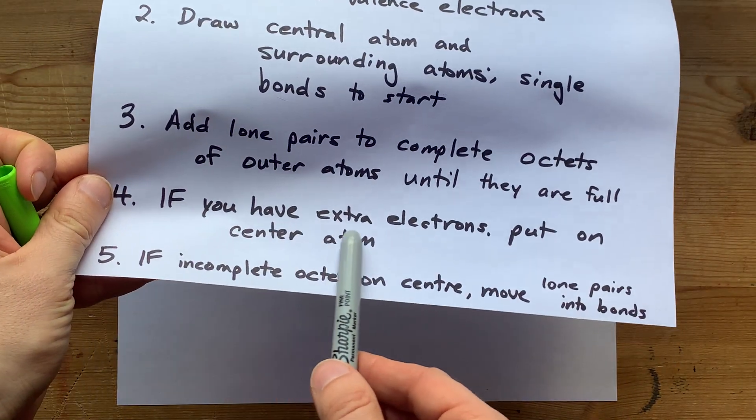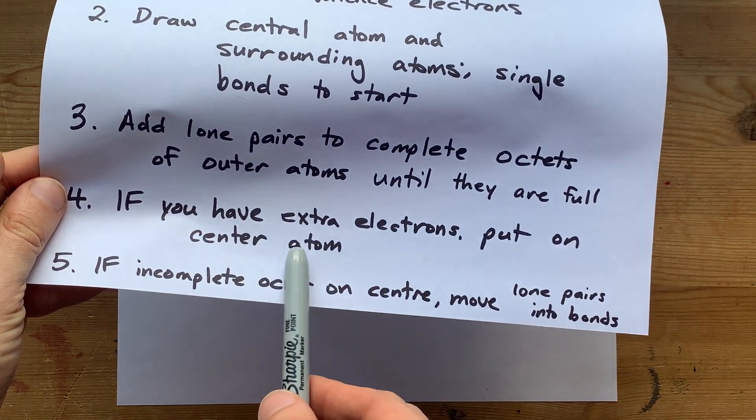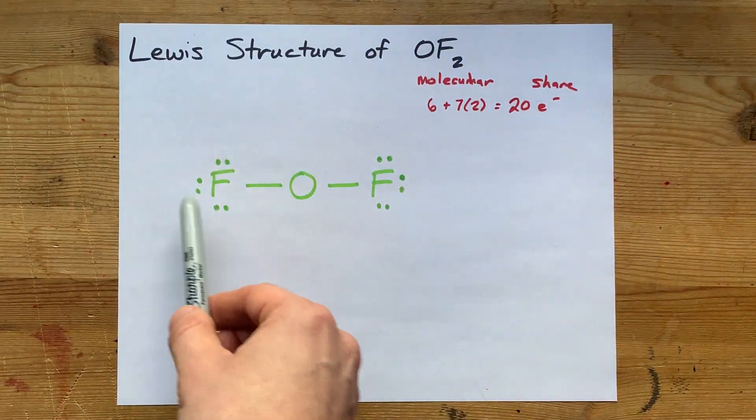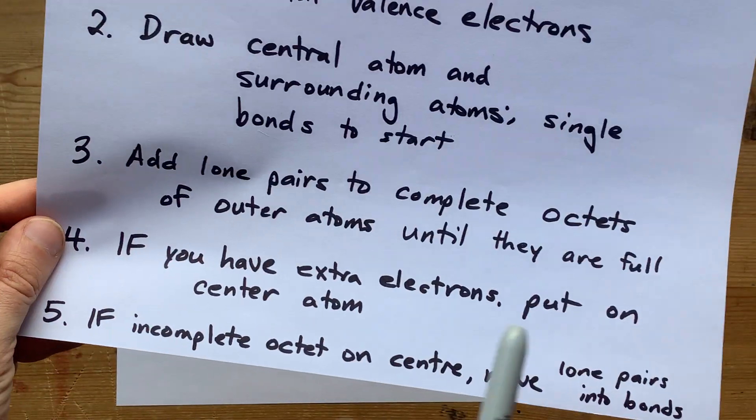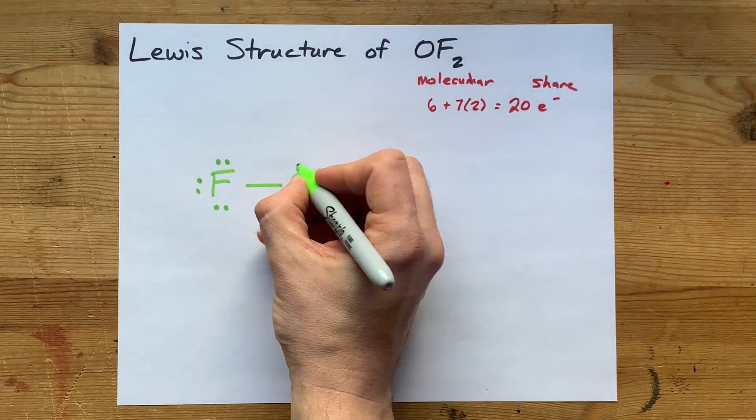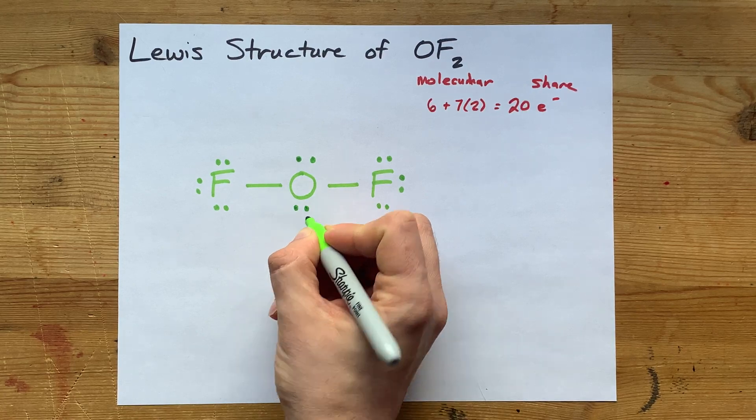Now, if you have extra electrons, put them on the center atom. Well, I only counted 16 electrons total, and I do need 20. So I'm going to dump them onto the center atom, 17, 18, 19, 20.